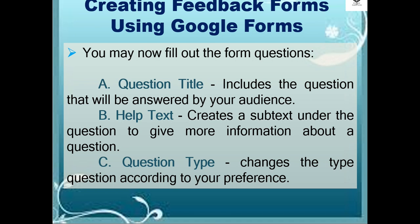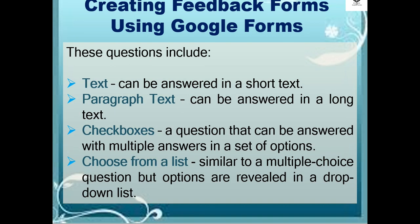You may now fill out the form questions. For example, a question title includes the question that will be answered by your audience. Then the help text creates a subtext under the question to give more information about the question. Then the question type changes the type of question according to your preference. This includes question text, which can be answered in a short text.